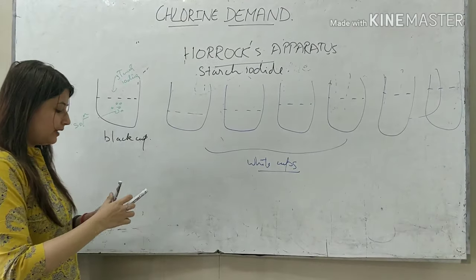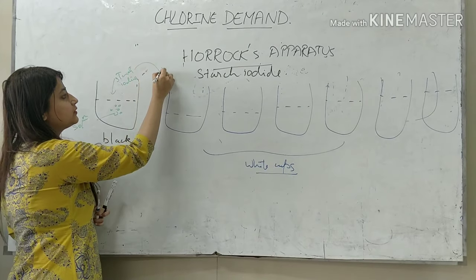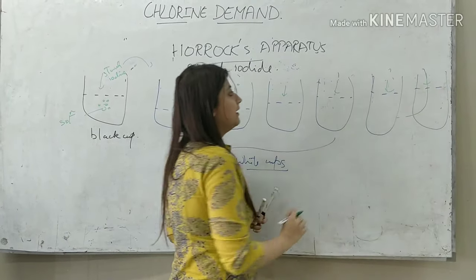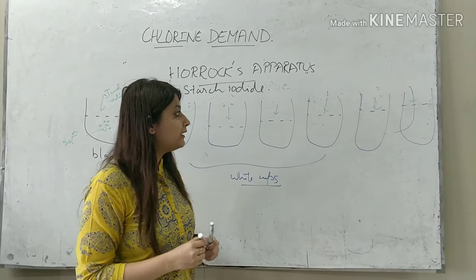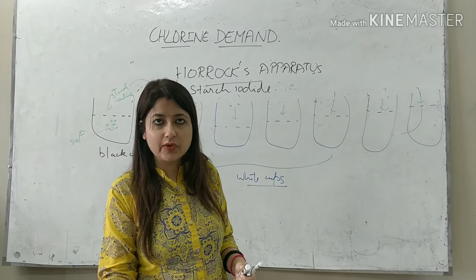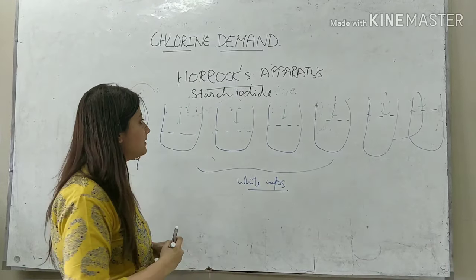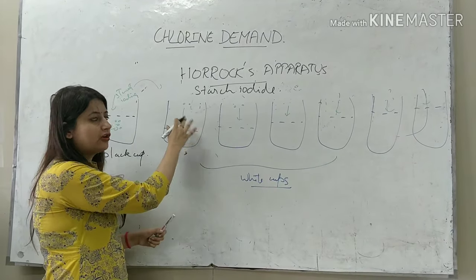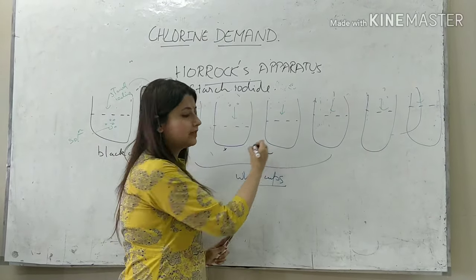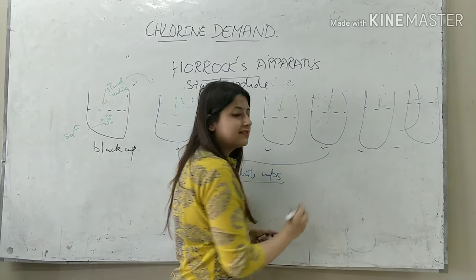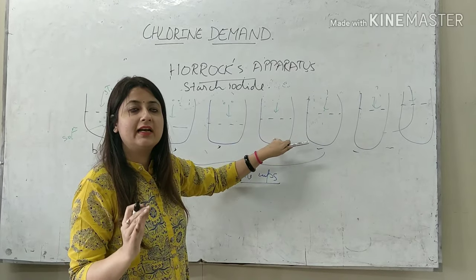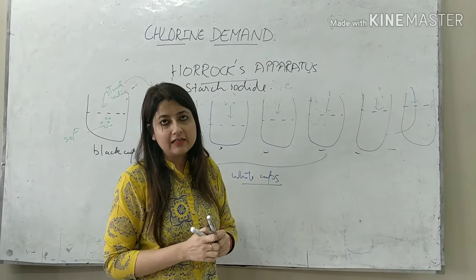In all the white cups the water is already filled at different levels. We add 2 drops of the starch iodide indicator into each cup. The property of these cups is that whenever one cup starts showing a colour change, all subsequent cups will also show colour change. For example, if cup 1 and cup 2 show no colour change but cup 3 does, then cups 4, 5, and 6 will also show colour change.